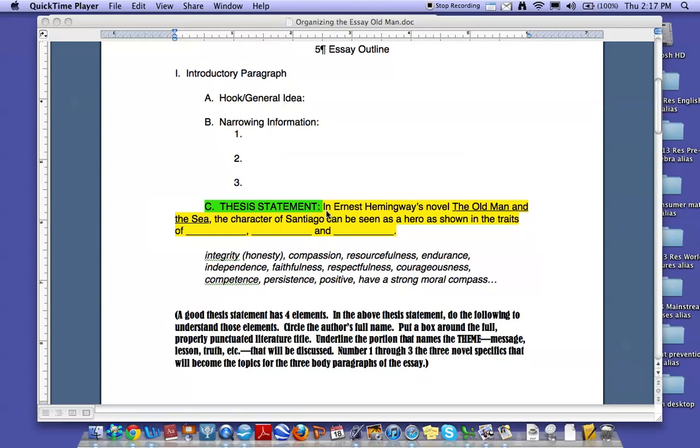There's an example here, highlighted in yellow, that I want you to use with your essay that you'll be writing on The Old Man and the Sea. In Ernest Hemingway's novel, The Old Man in the Sea, the character of Santiago can be seen as a hero, as shown in the traits of blank, blank, and blank.